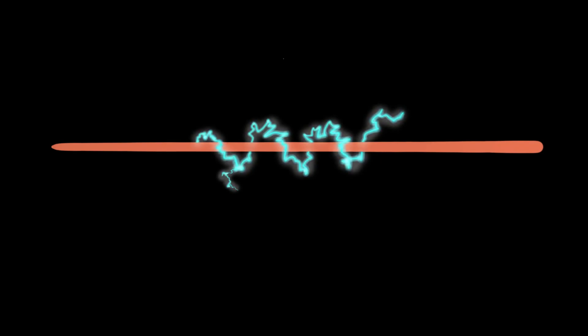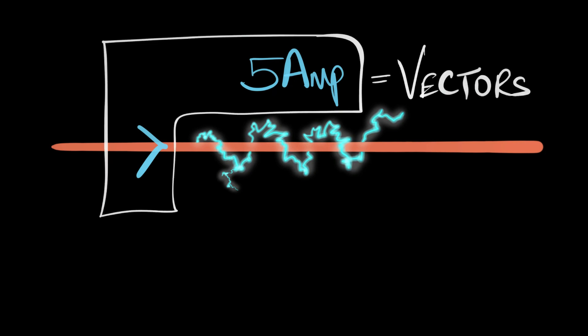Electric current has both a magnitude and a direction, right? And you might know things that have both magnitude and directions are vectors. So the question we're gonna try and answer is, is electric current a vector quantity?